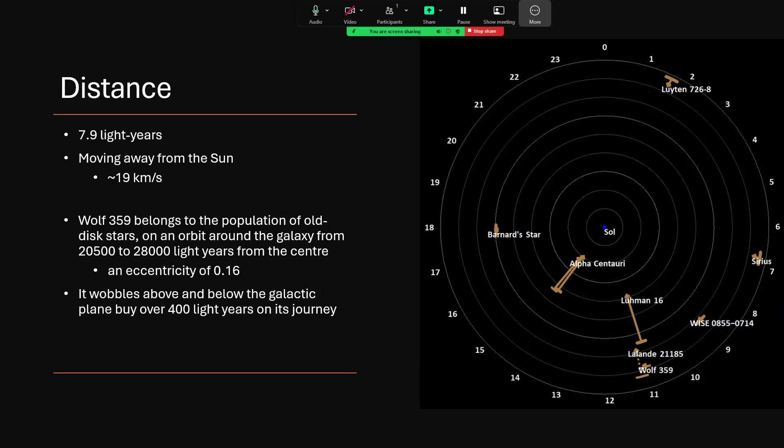But the sun is doing several hundred kilometers per second around the center of the galaxy. And Wolf 359 moves around the galaxy as well. It's part of the population of old disk stars on an orbit that takes it from about 20,500 light years to about 28,000, so a slightly elliptical orbit around the center of the galaxy with a modest eccentricity of 0.16. And as with the sun, these orbits are perturbed by the gravity of the mass in the spiral arms, and so it moves above and below the galactic plane by about plus or minus 400 light years.